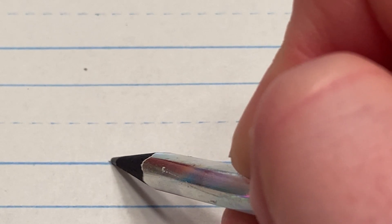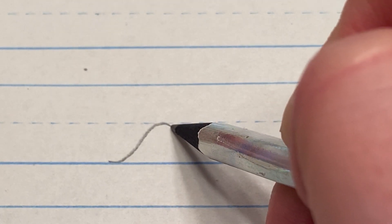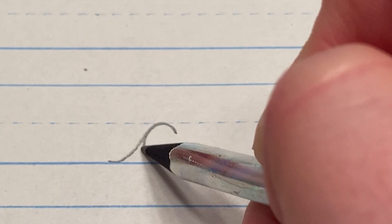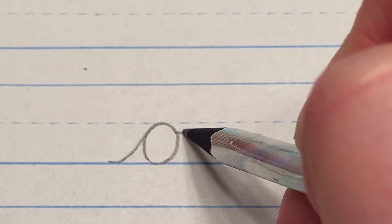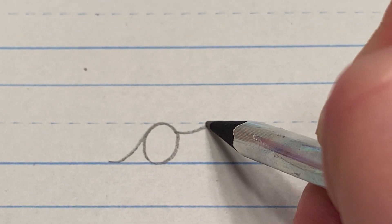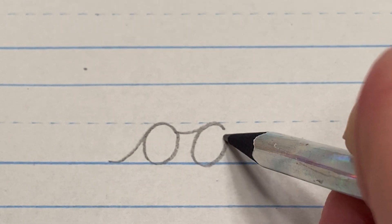You start at the floor, curve up to the middle, back down around, and then you connect the O right here at the top again, without going all the way down to the bottom.